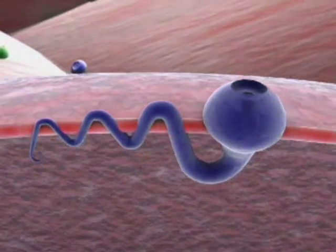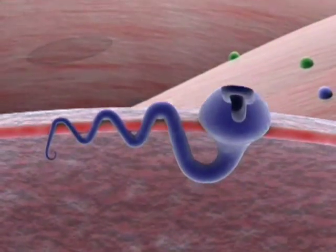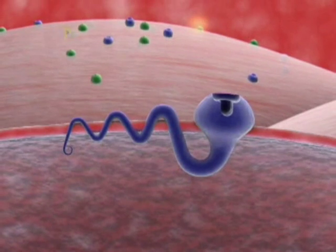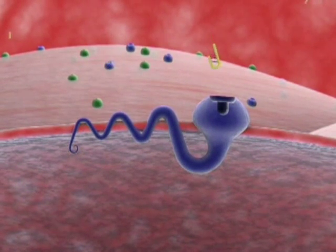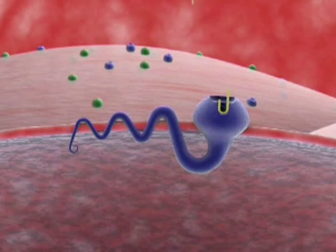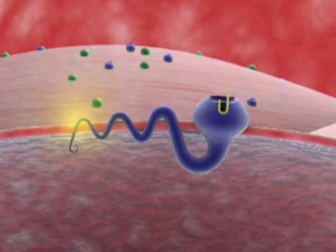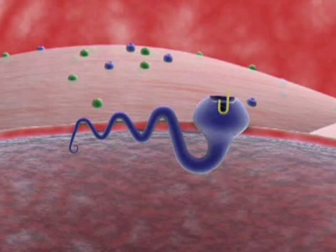When endothelin binds with the receptor, the receptor sends a signal into the cell. For example, when endothelin 1 binds to an ETA receptor in vascular smooth muscle cells, the ETA receptor sends a signal causing the blood vessels to contract.